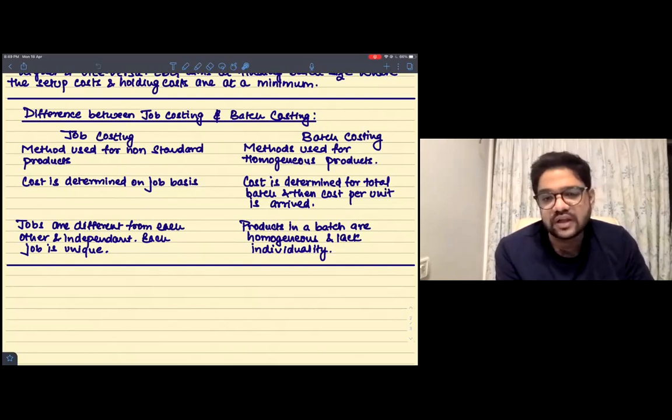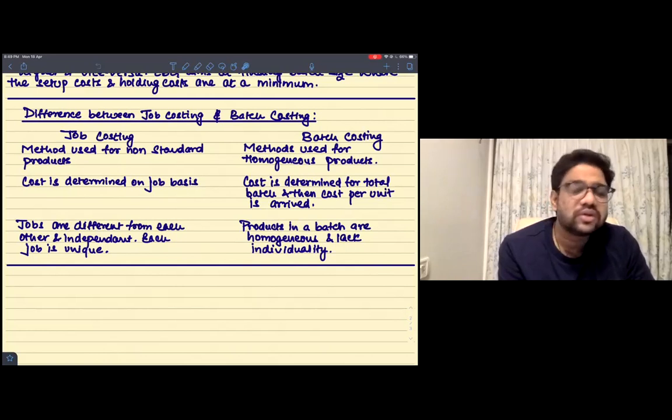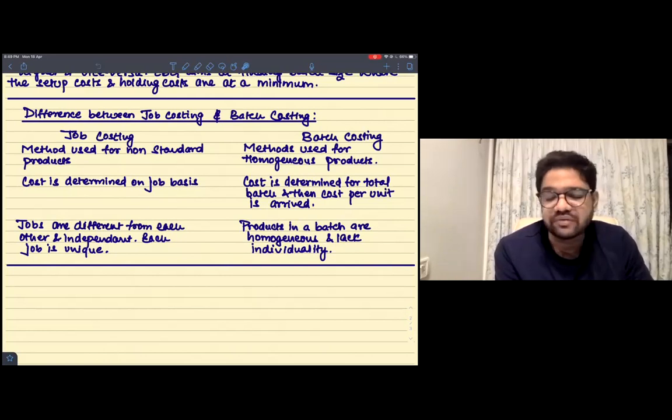Whereas in a batch, the units are the same. So everything around the batch is going to remain the same. So that's all that we have in unit and batch costing. It's a very small topic. If you have to have a little focus, you should be focusing upon this last part which is the differentiation between job and batch costing, because I think that is something which is important.